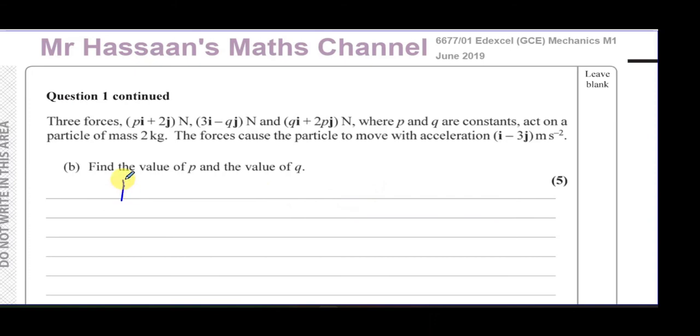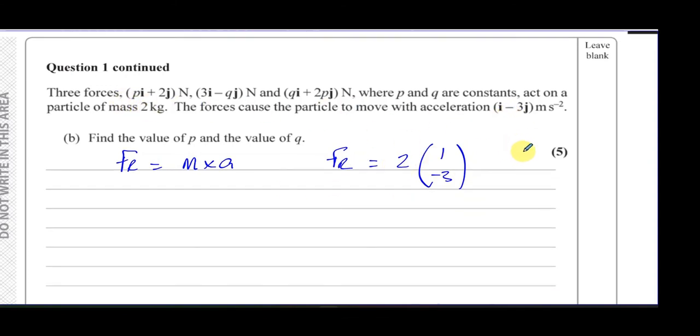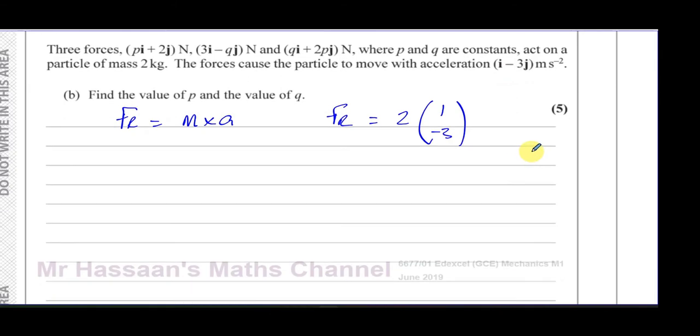Basically, what we're going to use here is the fact that the resultant force is equal to the mass times acceleration. So we know the resultant force in terms of the mass, which is 2, times acceleration, which is (1, -3).